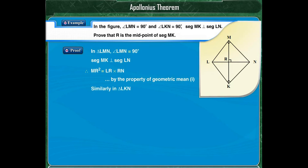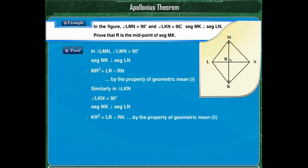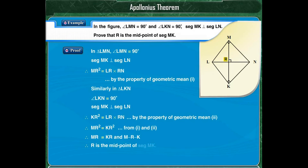Similarly, in triangle LKN, angle LKN is equal to 90 degrees and segment MK is perpendicular to segment LN. Therefore, by the property of geometric mean, KR squared is equal to LR into RN. That means, from equations 1 and 2, MR squared is equal to KR squared, and therefore MR is equal to KR. Since point R lies between points M and K and MR is equal to KR, R is the midpoint of segment MK.